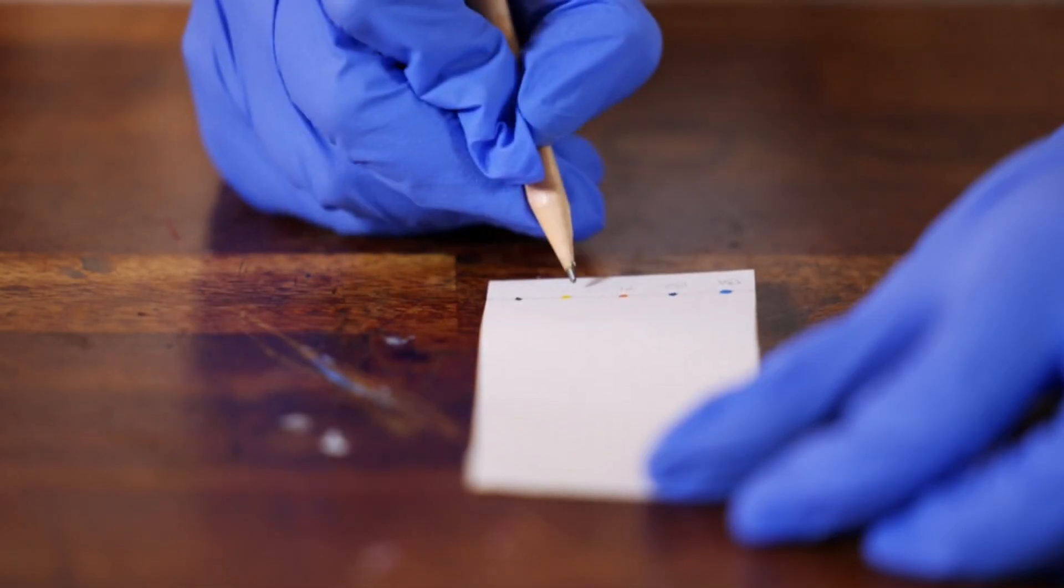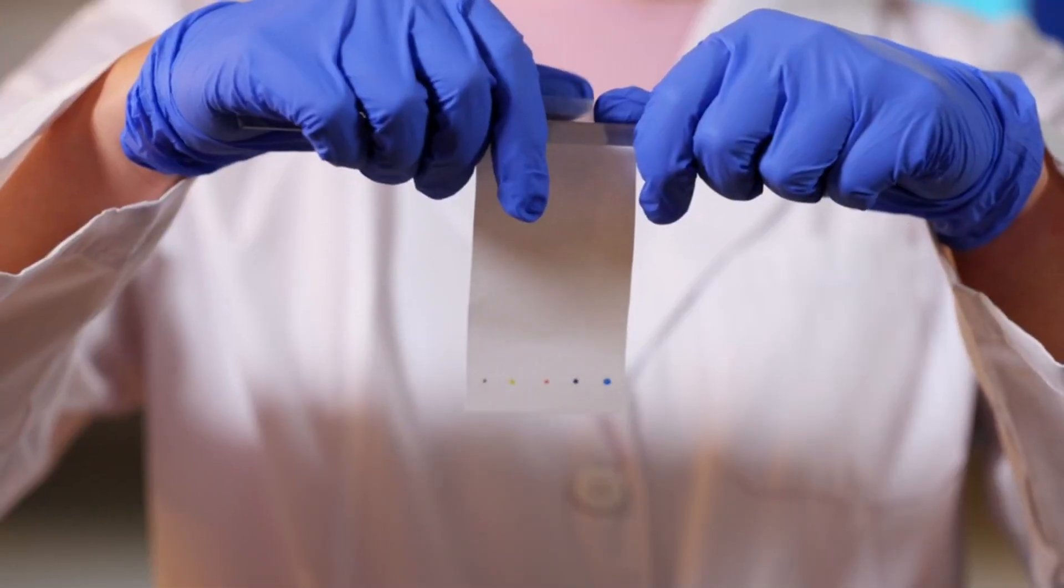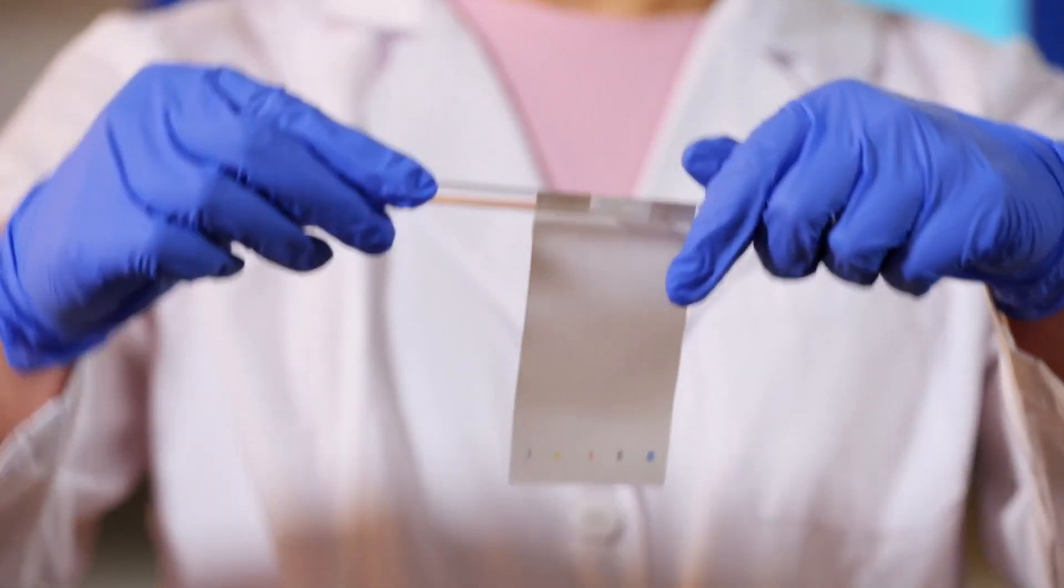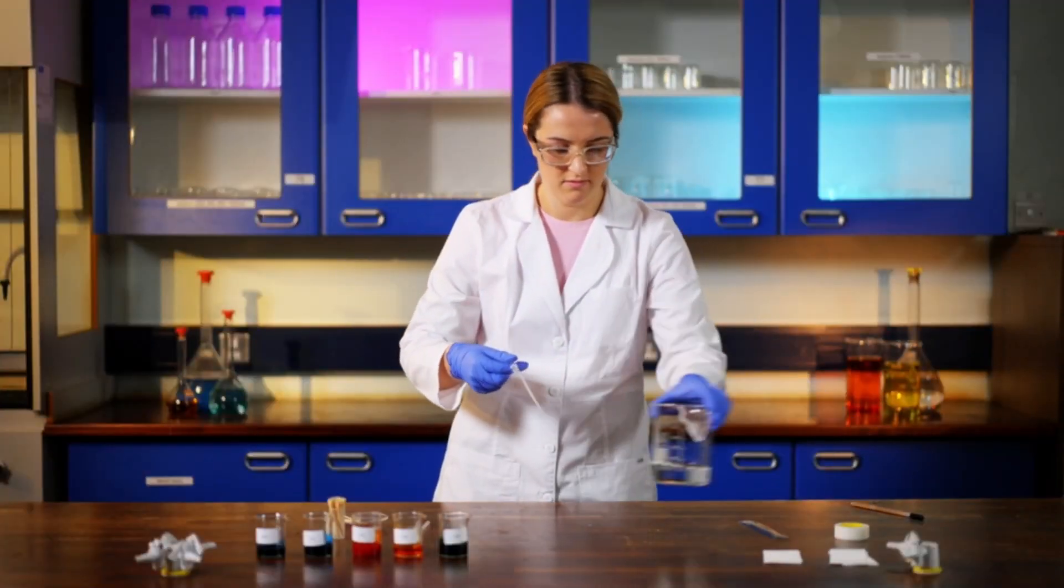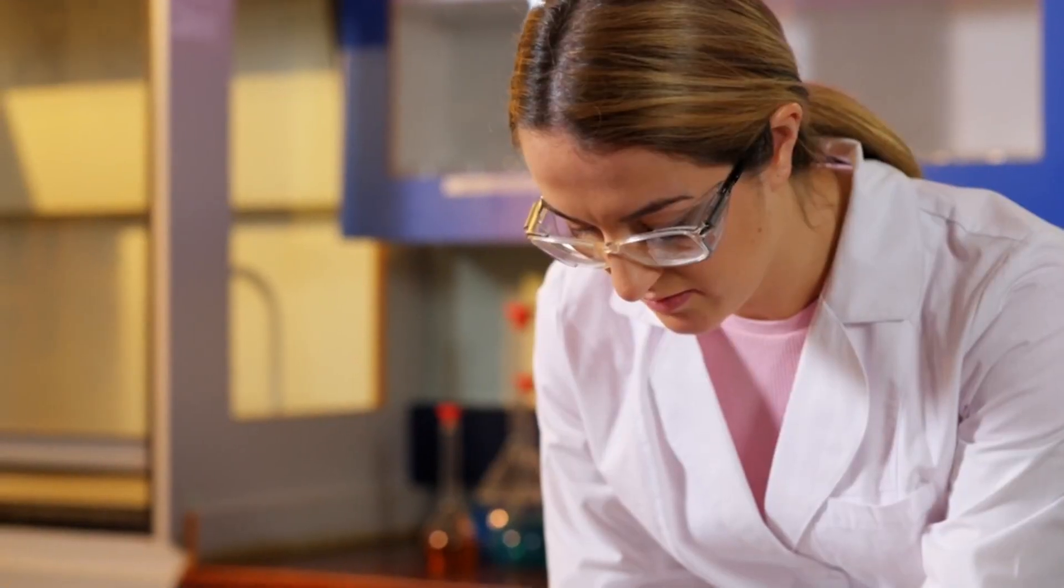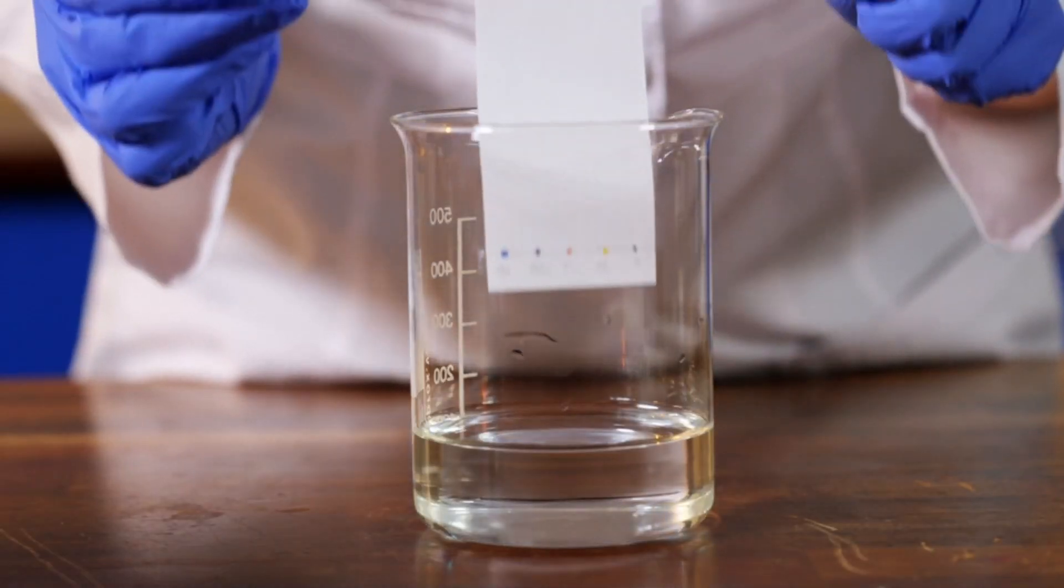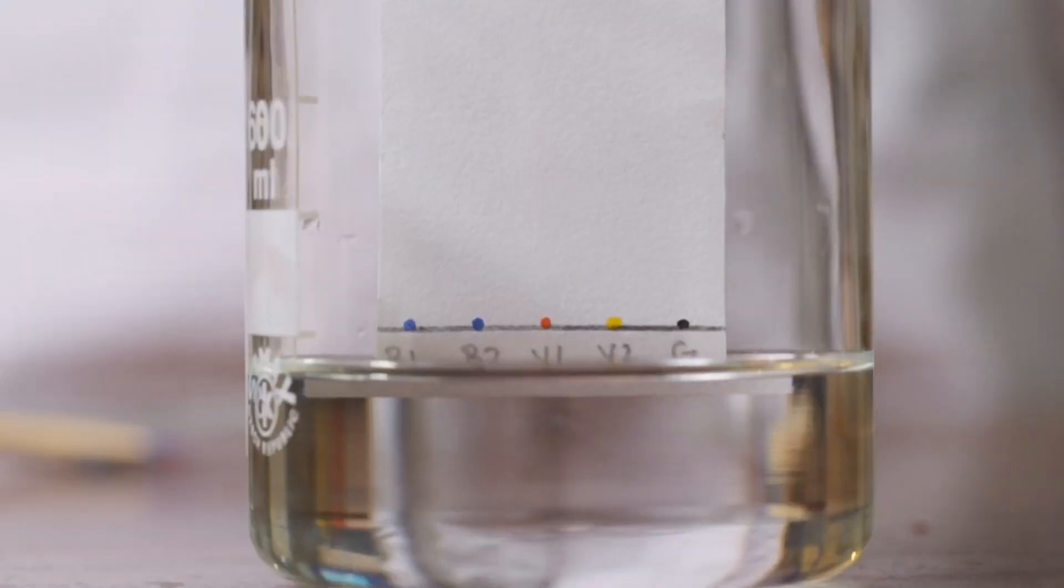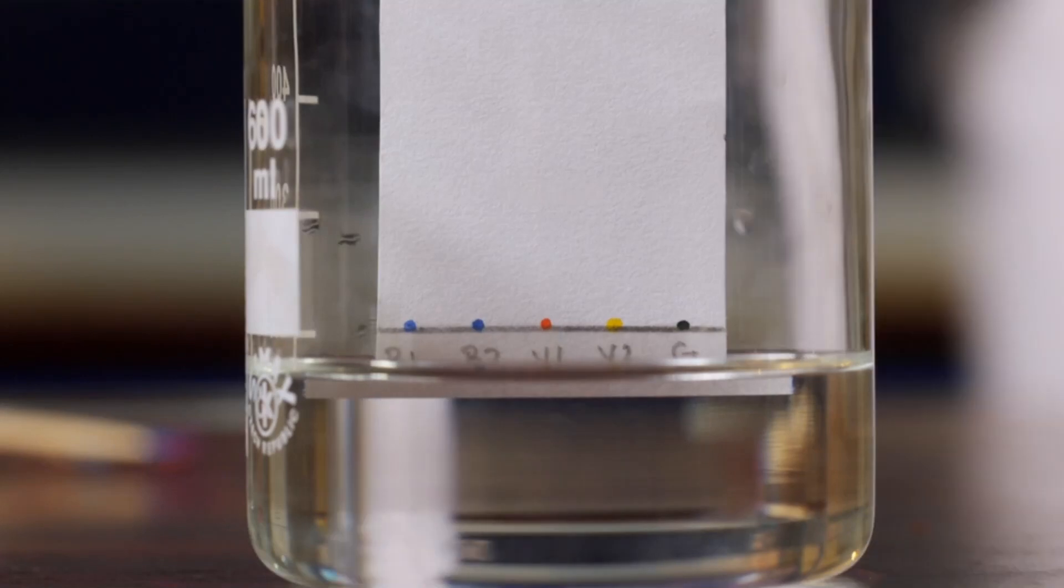Then use a pencil to label it. Now attach the paper to a glass rod or pencil using tape. Put some water into your beaker just deep enough that the very end of the paper goes into the water. Carefully lower your paper into the water letting the glass rod balance on the rim of the beaker. Make sure the pencil line is above the surface of the water.